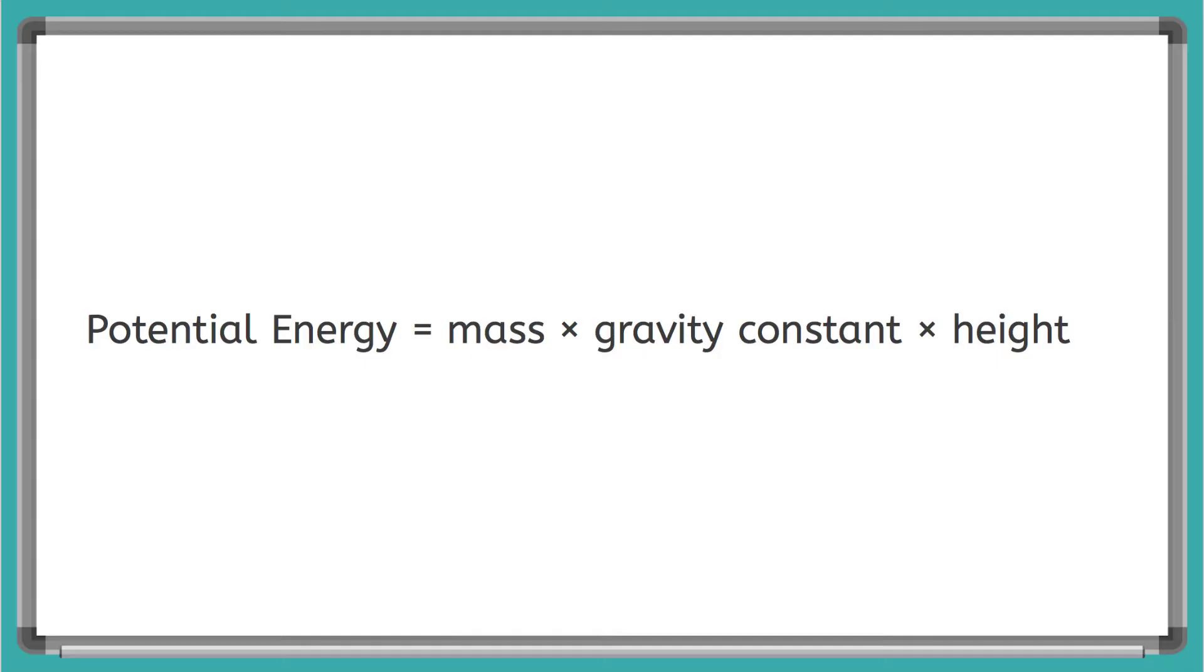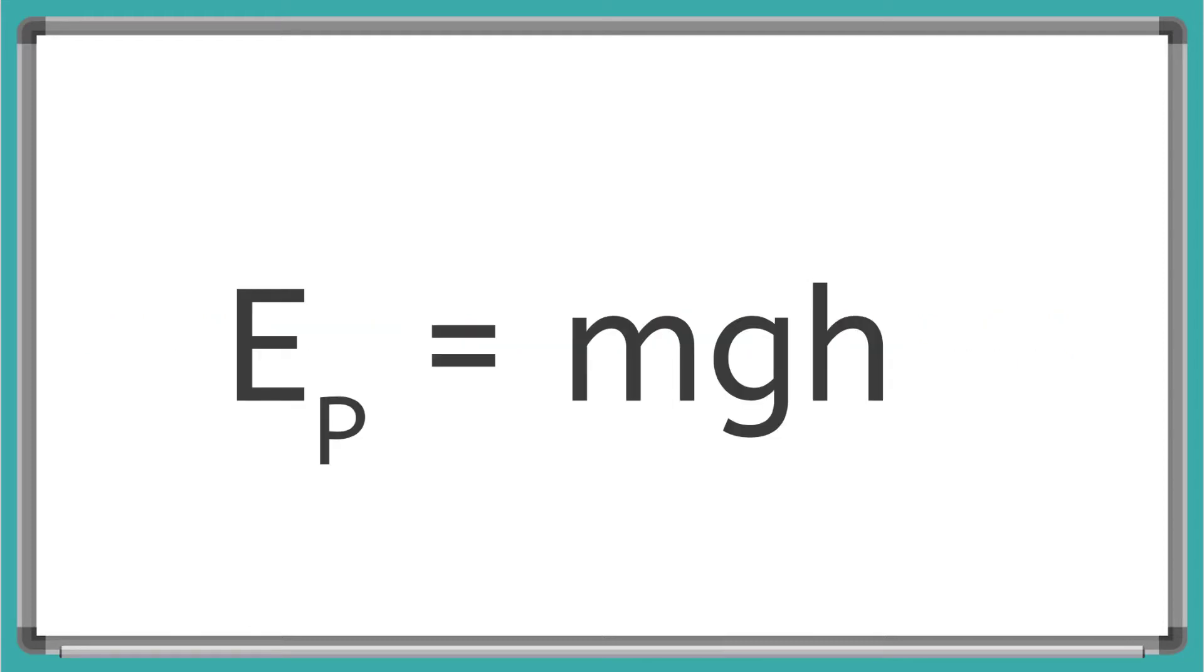And just like we did for the kinetic energy equation, we can use variables to represent these quantities. So we can also write the equation Ep equals mgh. And here again, we use the variable E to represent energy, and we use the p down below to remind us that what we are calculating is the potential energy.